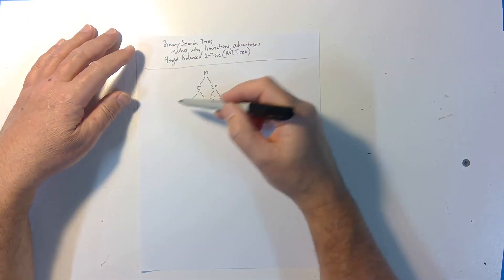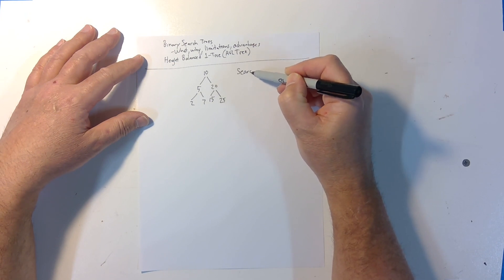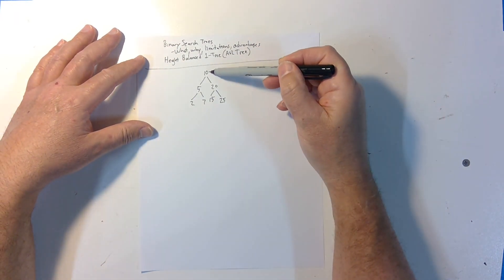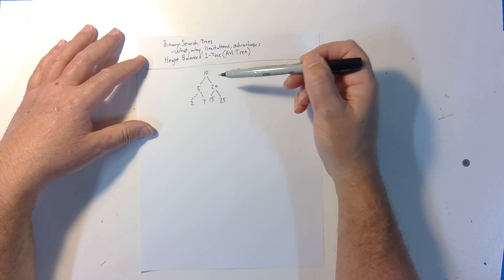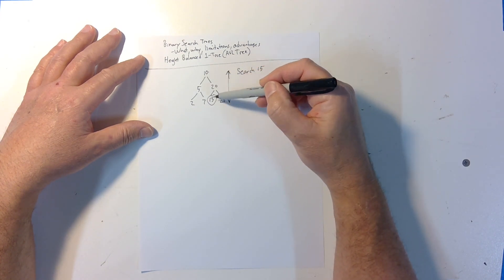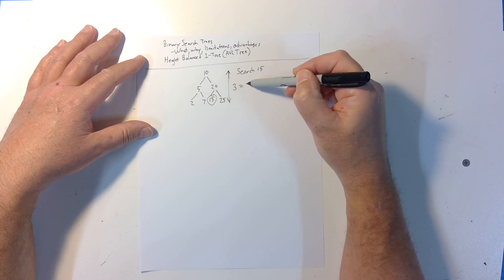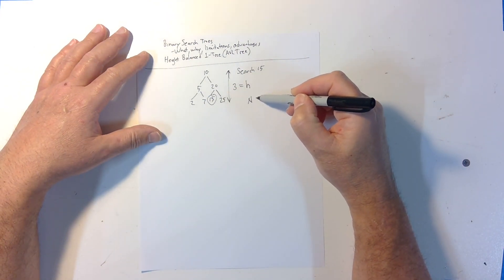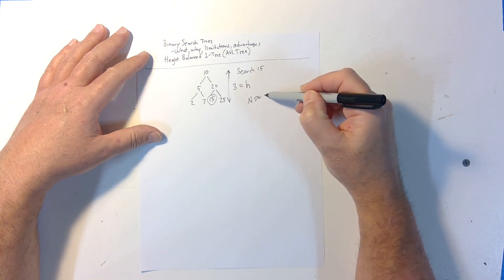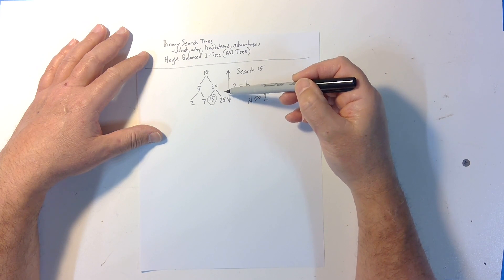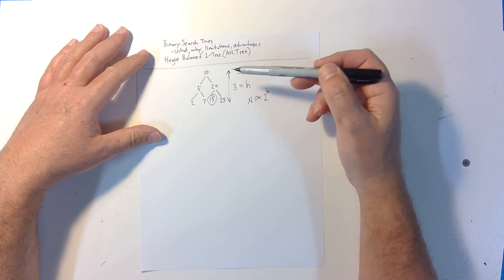The reason we like these is that they're efficient to search, because you basically never have to travel more than the height of the tree. For example, if we were looking for node 15, you start at the root. 15 is bigger than 10, so you move right; now you're at 20, and 15 is smaller than 20, so you move left — and you found it. We only had to look at 10, 20, and 15 — just three nodes — traveling only the height of the tree. That's super efficient because the number of nodes in a binary tree is approximately 2 to the height.